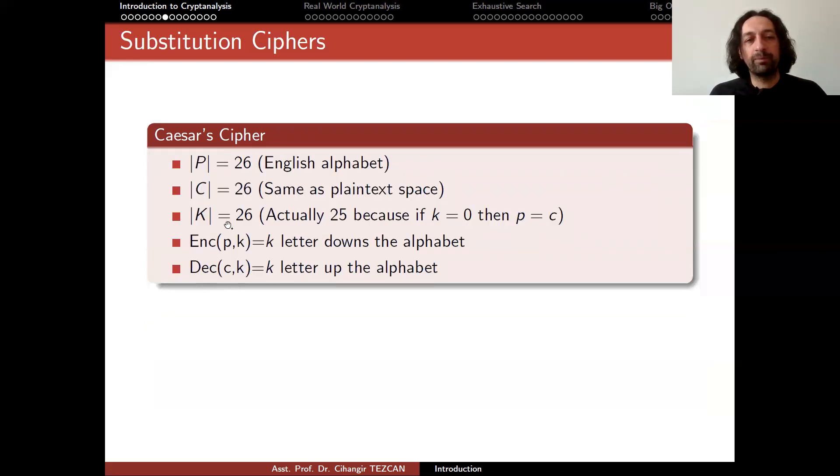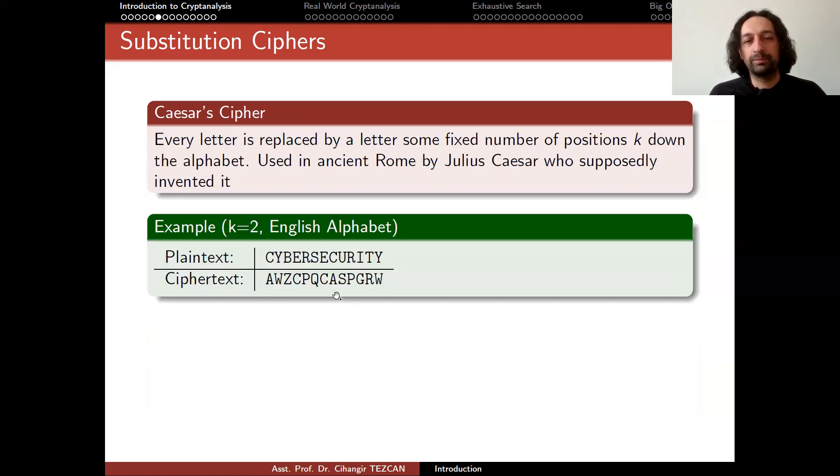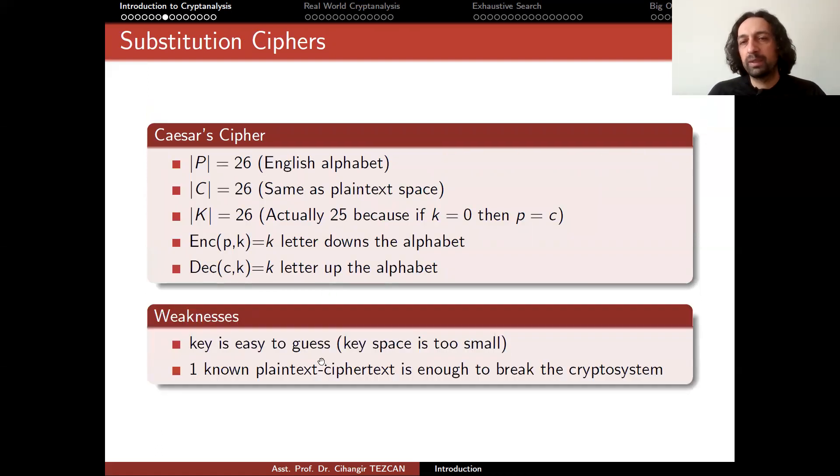This is actually the problem because, of course, if you are choosing k equals to zero, then plaintext will be equal to ciphertext, which wouldn't give you any security. So there are actually 25 possibilities. This is the weakness of the cipher, because anybody who captures this ciphertext, if they assume that this is encrypted by Caesar cipher, they can just move every letter one letter up in the alphabet and check if it looks something meaningful. If it doesn't, they repeat the process and in at most 25 repetitions, you will obtain cyber security in the worst case scenario. Key is easy to guess. The key space is too small, which is 25. You can do 25 many trials by using pen and paper. And also, if you even capture one plaintext and the corresponding ciphertext, instantly you know the key.